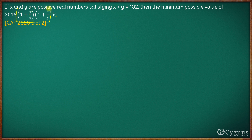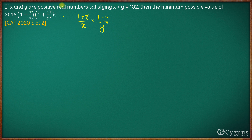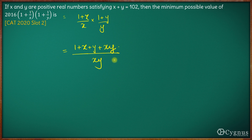Let us focus on the part (1 + 1/x)(1 + 1/y). This expression comes out to be (1 + x)/x into (1 + y)/y. Multiplying, the denominator becomes x times y, and the numerator becomes 1 plus x plus y plus x times y.